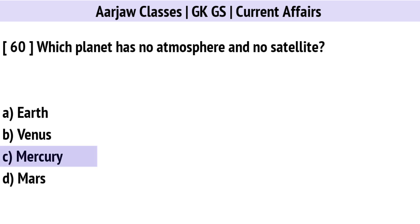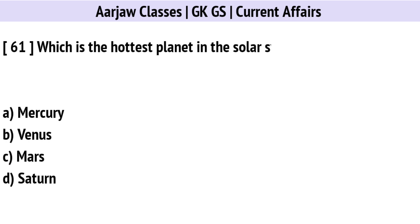Which planet has no atmosphere and no satellite? Correct option is C: Mercury.